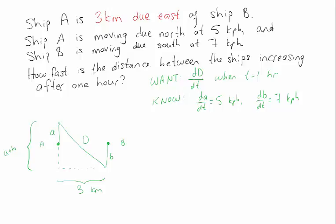So now I can relate my variables. I can say that D squared is equal to 3 squared plus (A plus B) squared. And notice all of the units work out pretty nicely here. We have kilometers and hours, nothing is in any other units, so we don't have to worry too much about units.